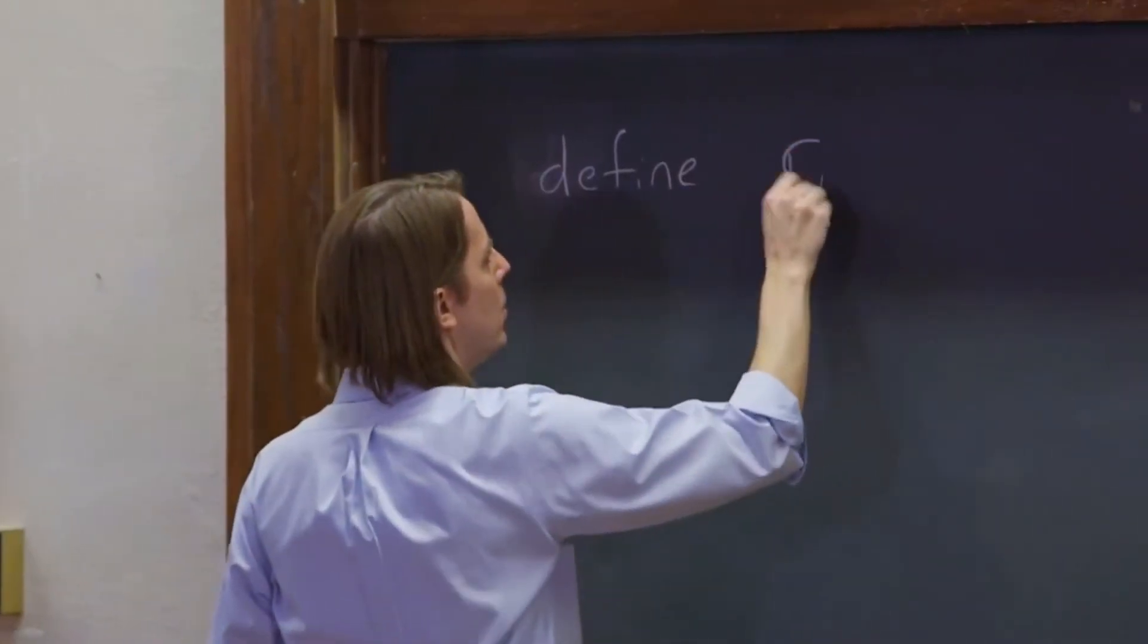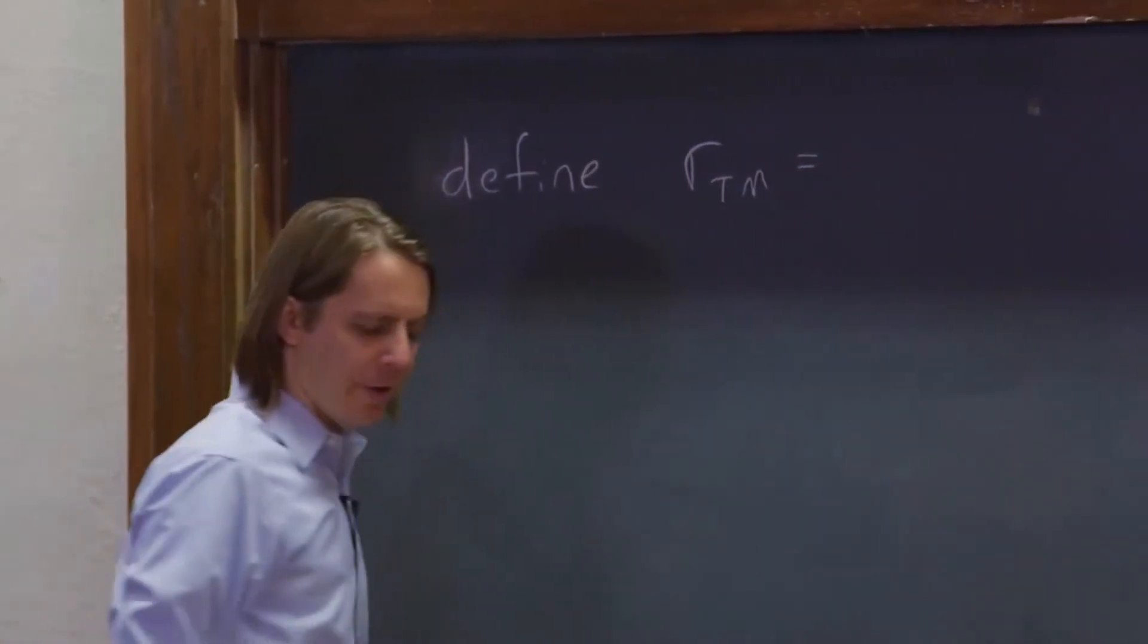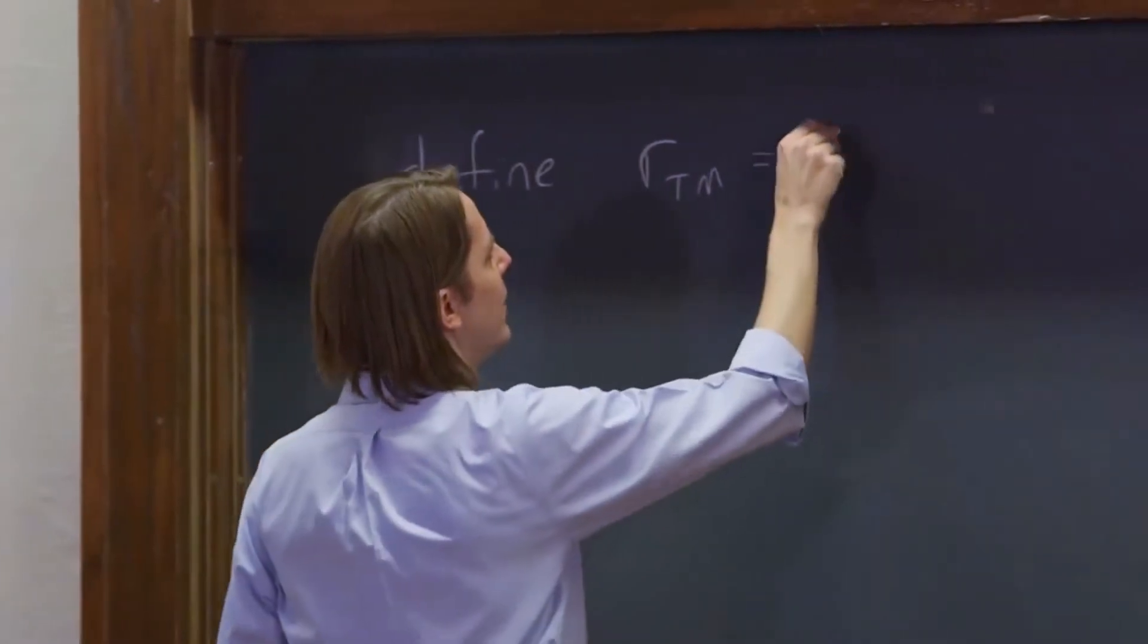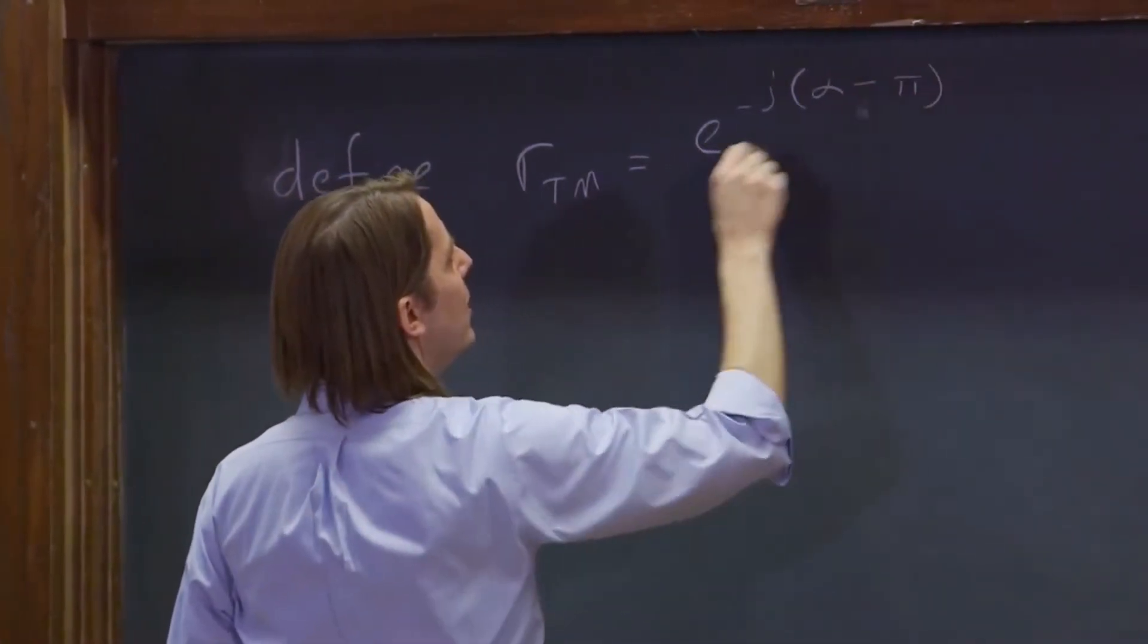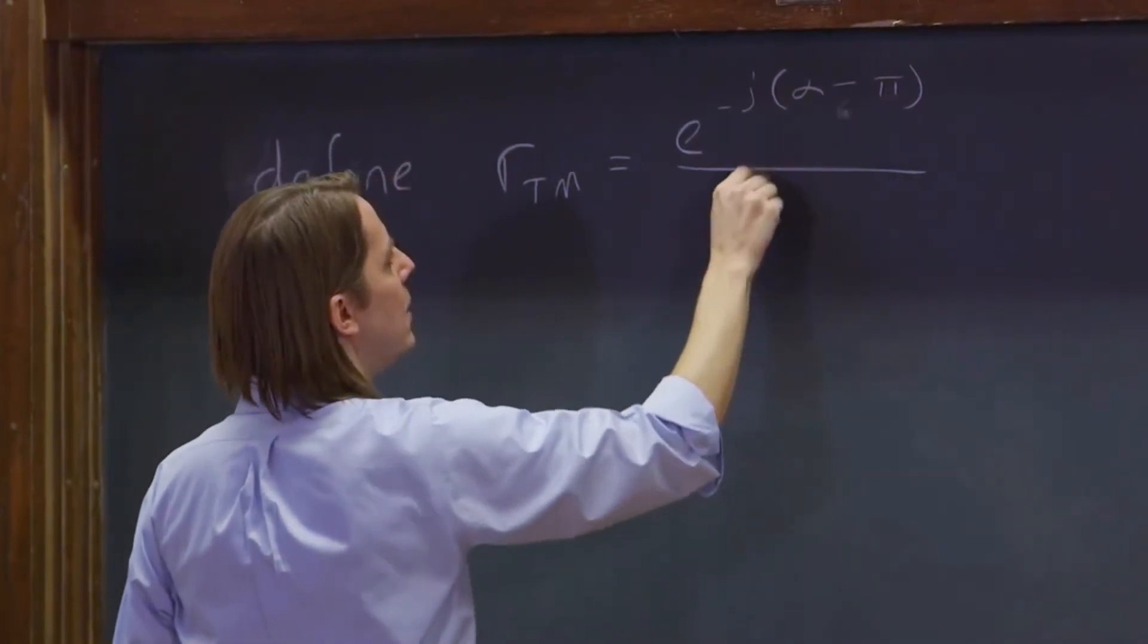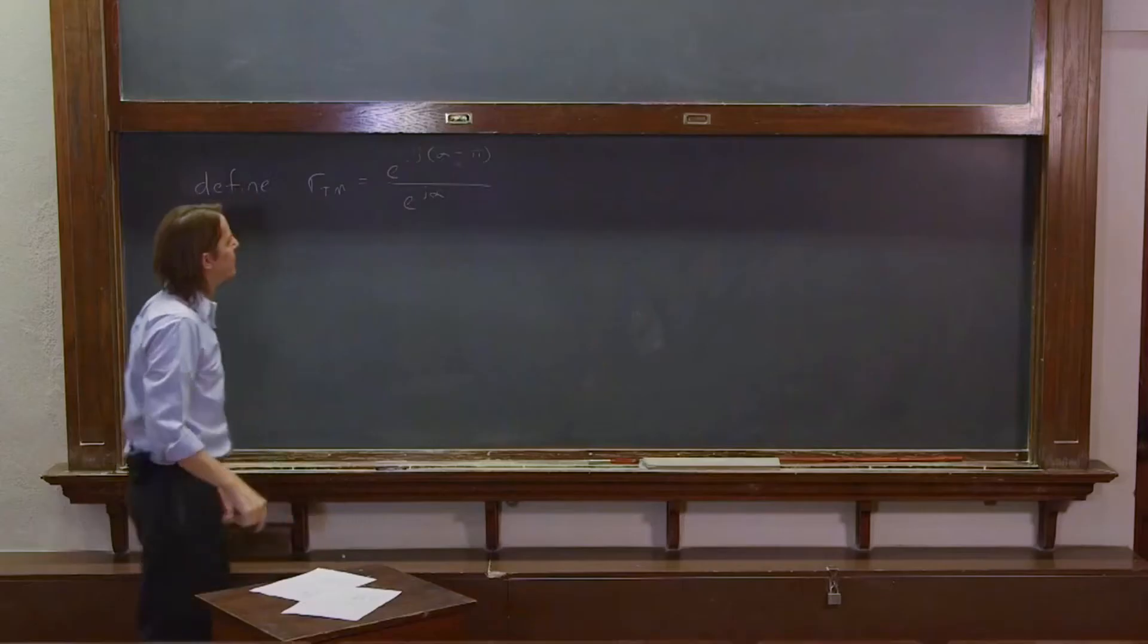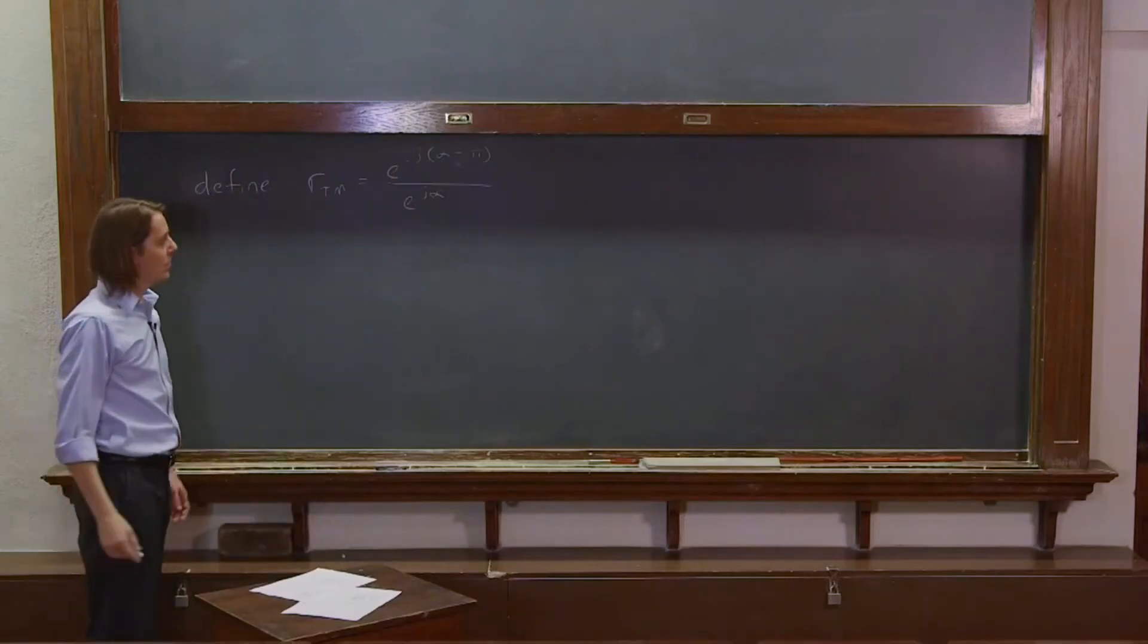So RTM, we're going to define almost the same way, as e to the minus j alpha minus pi over e to the j alpha. So let's check and make sure that's OK.